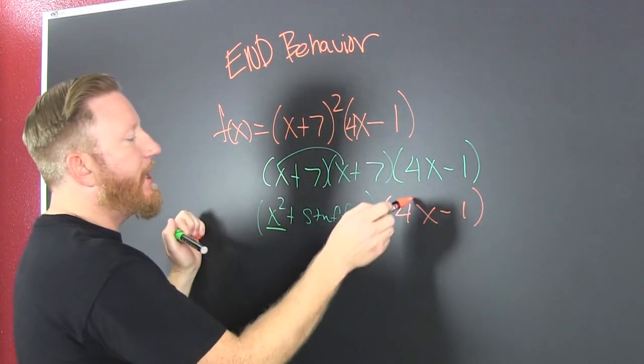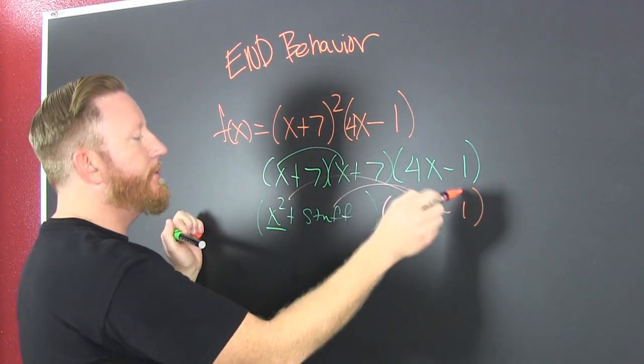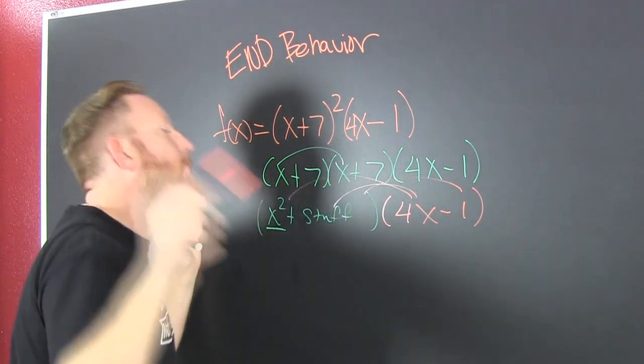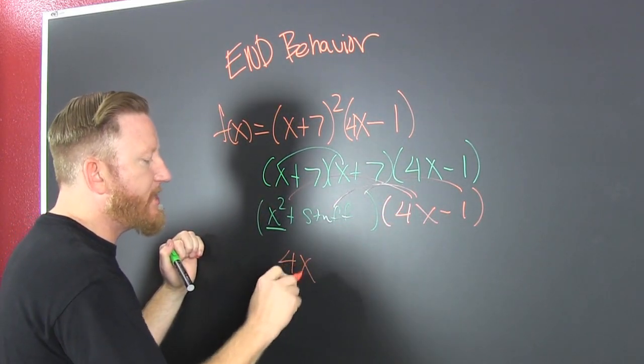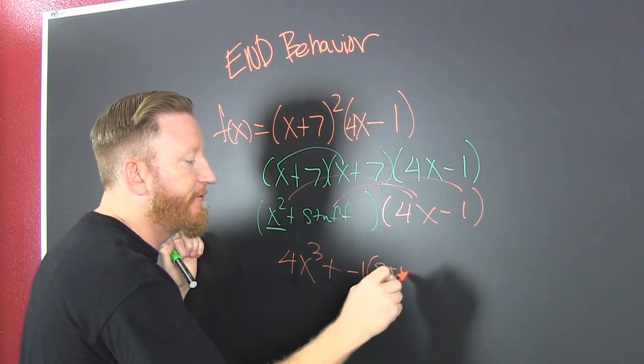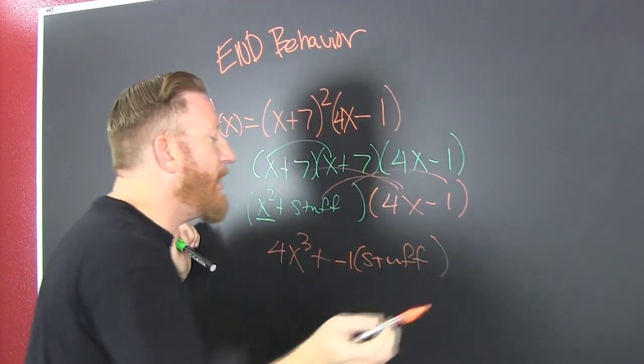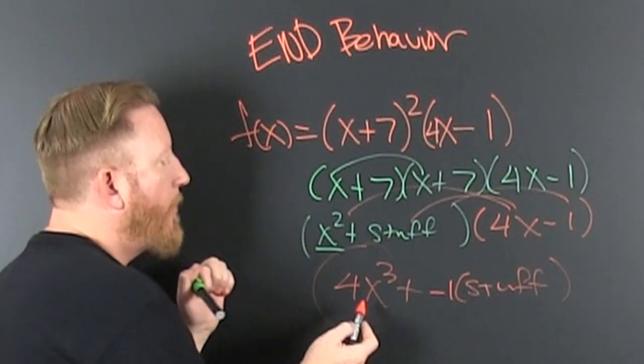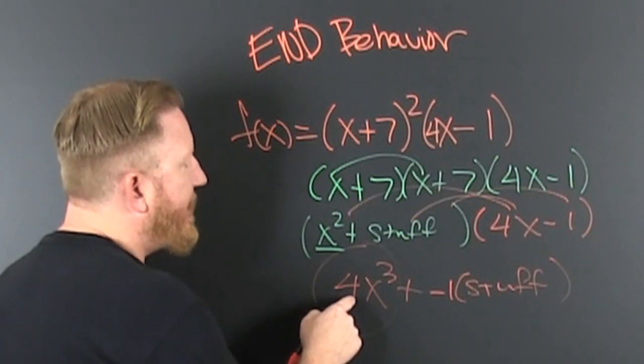And then if we were like, we'd have, looks like, 4 times x to the third plus minus 1 times some stuff. Anyways, what are we looking for? We're looking for that. So, what is it?